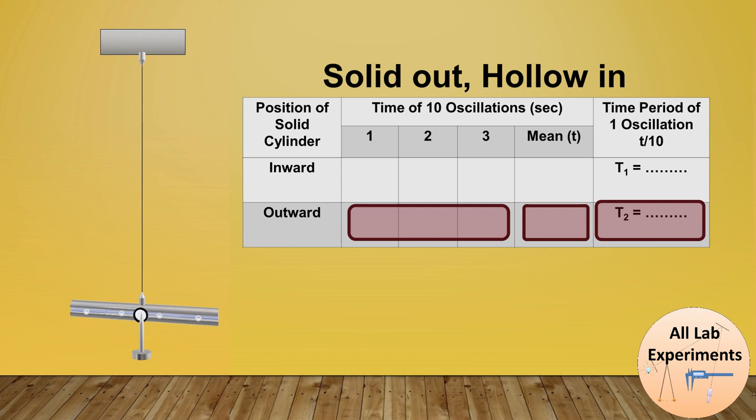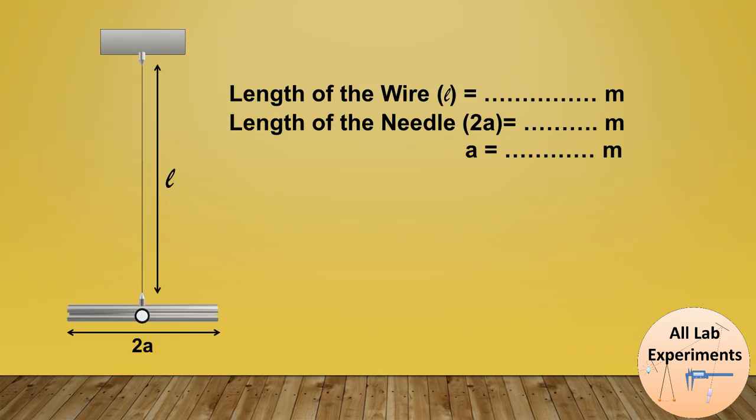Along with this, we need some other parameters in this experiment. We require the length of the wire (ℓ) and the length of the needle, which we consider as 2a, and further we will calculate this quantity a. All these parameters should be in SI units, meaning meters.